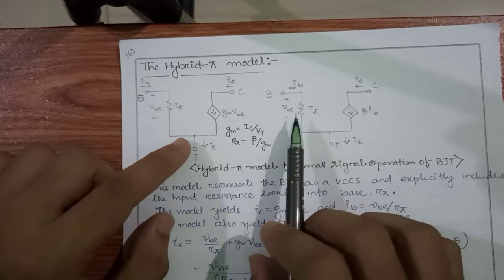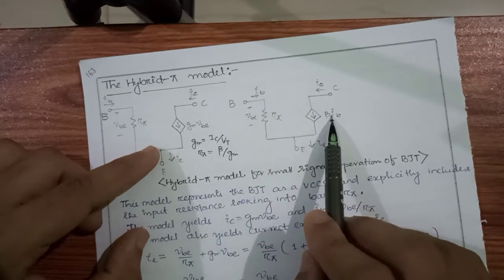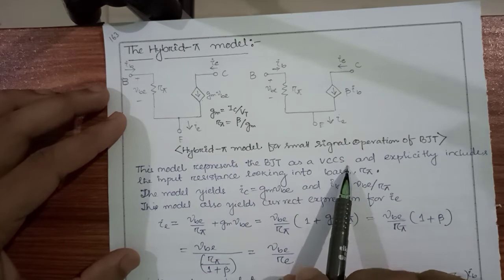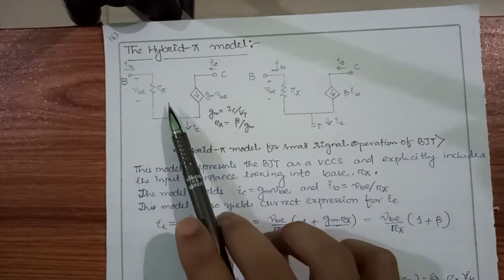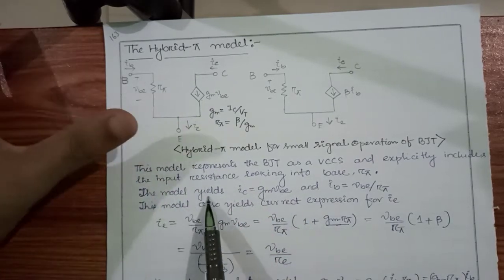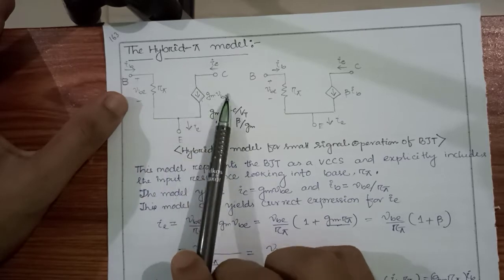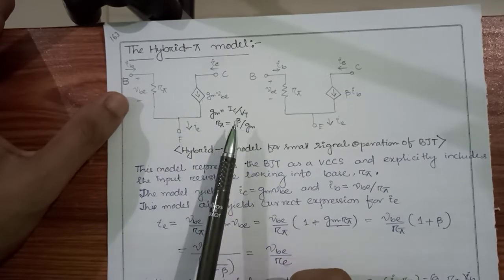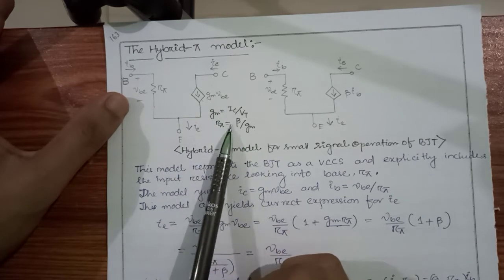There are two types of equivalent circuit representation. One is a voltage controlled current source, and the second is a current controlled current source — a current source controlled by another current, which is nothing but I_b. This model represents the BJT as a voltage controlled current source and exclusively includes the input resistance looking into the base, that is r_pi. It is the equivalent small signal resistance seen from the base end, between base and emitter. For this model, we first find V_be, then from V_be we find G_m·V_be, where G_m = I_C / V_T, and r_pi = beta / G_m.